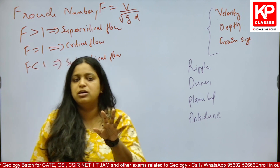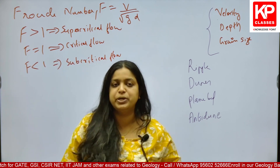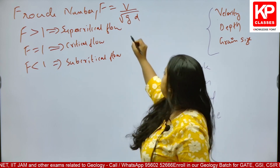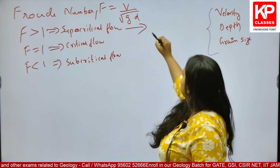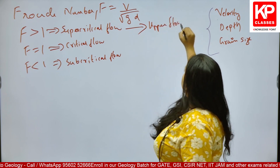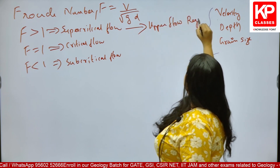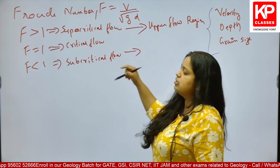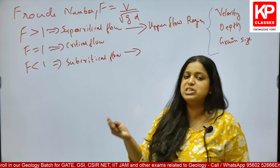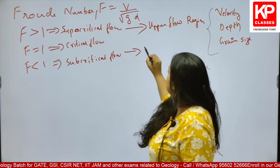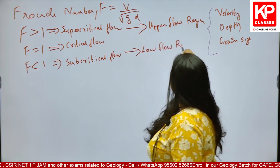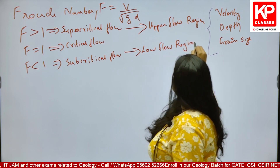When the flow condition is supercritical, when F is greater than 1, the energy condition is called as upper flow regime condition. When the energy condition or the Froude number for a particular flow situation is less than 1, we call that as low flow regime condition.